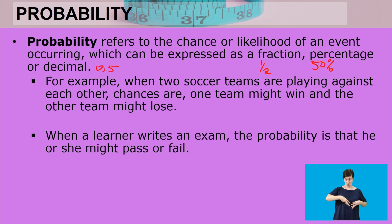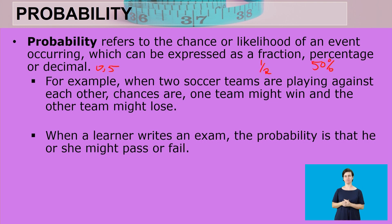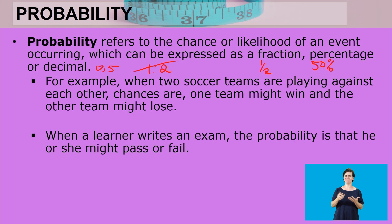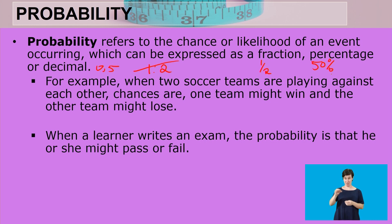These are the only three ways in which we can express probability. The probability can never be expressed as a ratio, so you can never write probability as 1:2. This is completely wrong. We only express probability as a fraction, as a percentage, and as a decimal number.